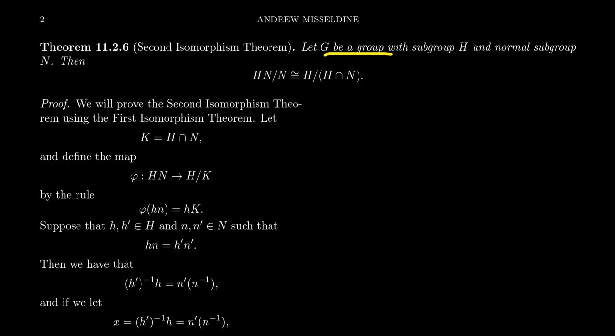So let G be a group — this could be finite or infinite, doesn't matter. Let H be a subgroup of G and let N be a normal subgroup of G. The second isomorphism theorem tells us that if you take the subgroup HN and mod it out by N, this will be isomorphic to the group H modded out by H intersect N.